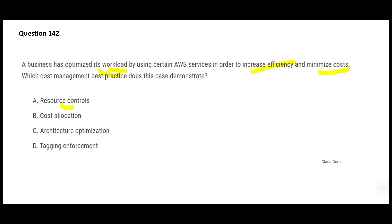Option B — cost allocation — means you just allocate a budget; you say you can only spend five dollars. That will also not help because it is a cost management mechanism but it does not solve your actual problem. Cost management means solving the core problem for less money. Both A and B are wrong.